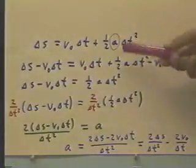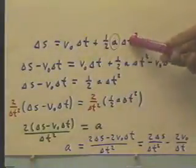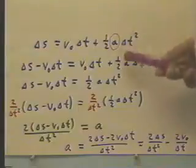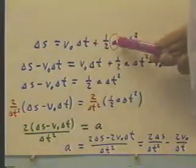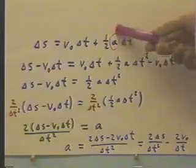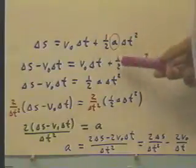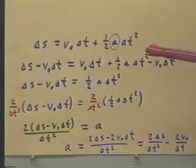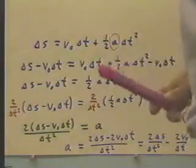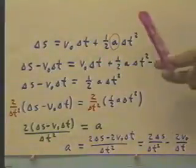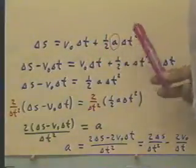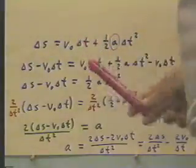You might ask, why didn't we get rid of the one-half and the delta T? That's because we get rid of terms that are added to terms involving A before we attempt to get rid of anything that's attached to it by multiplication. You can try it the other way. It can be done, but it's much more difficult to start with a division, for example, than it is to start with a subtraction.